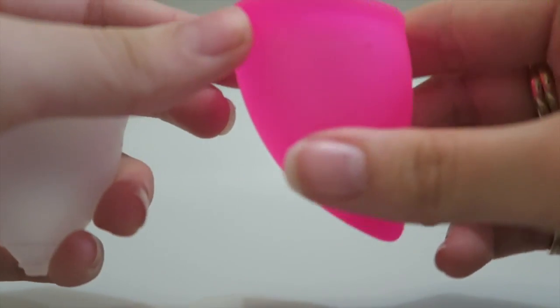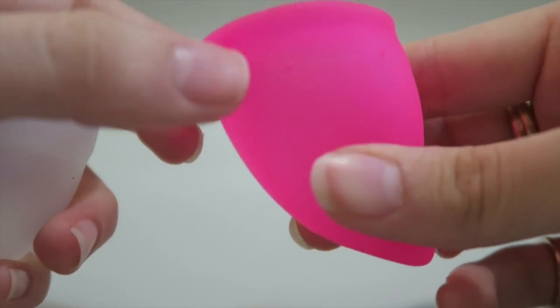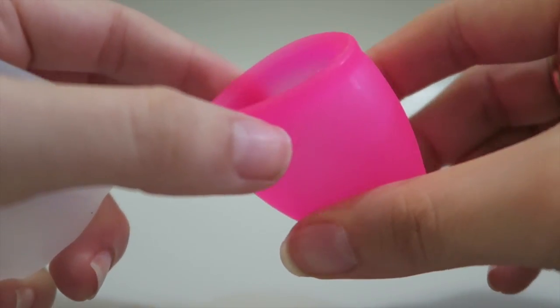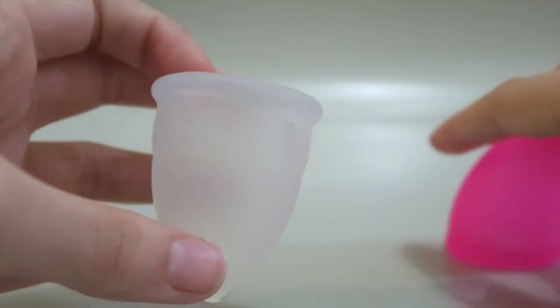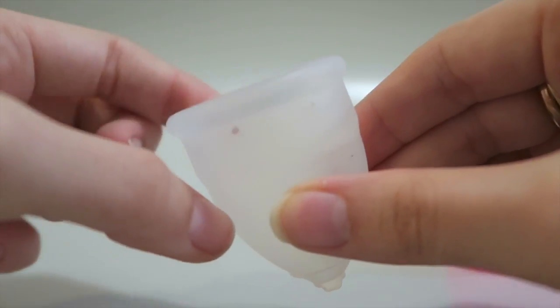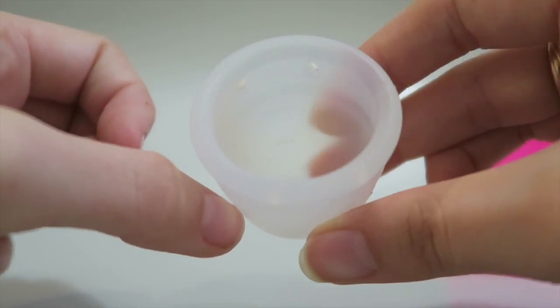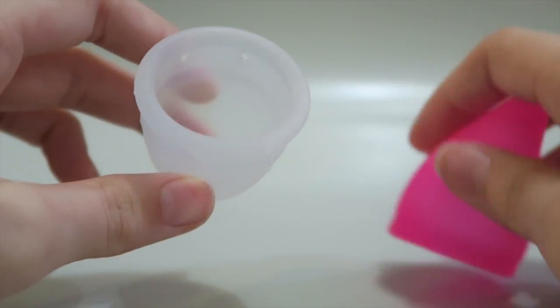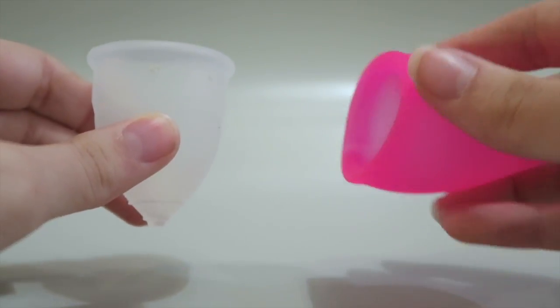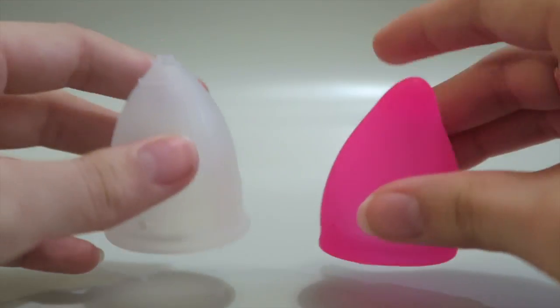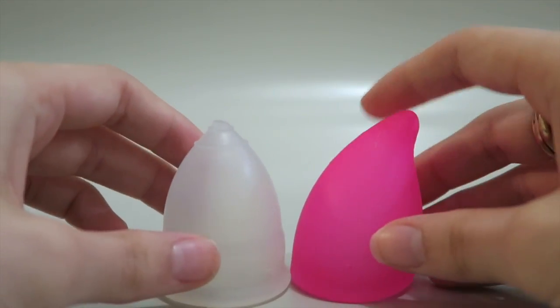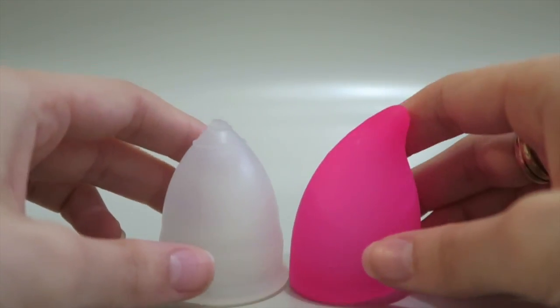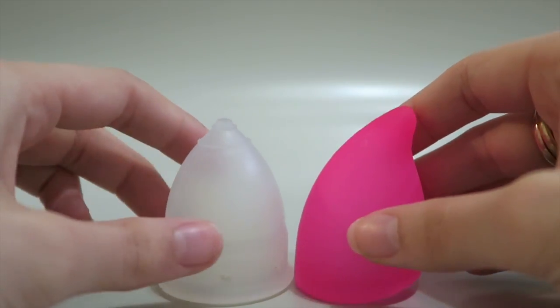The Fun Cup has four suction release holes, very small ones around the cup. The Organic Cup has slightly larger ones, as you can see there, in a symmetrical pattern. The Organic Cups are definitely easier to clean but I haven't had a problem with the Fun Cup getting open like some people might if they were to use a cup with smaller suction release holes.